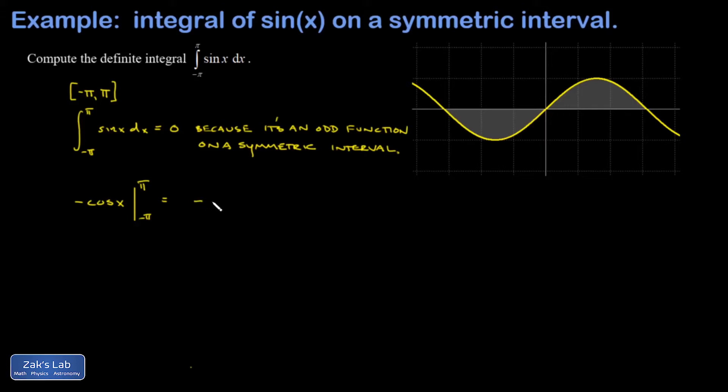When I plug in the upper limit, I get negative cosine of pi. Then I subtract what I get when I plug in the lower limit, negative cosine of negative pi. There are a lot of minus signs floating around in this.